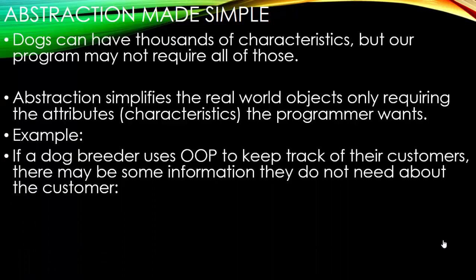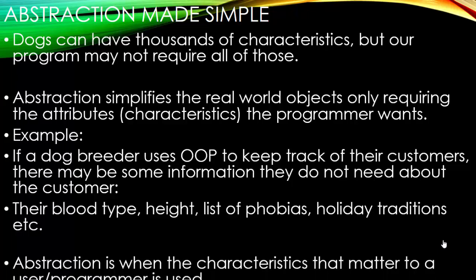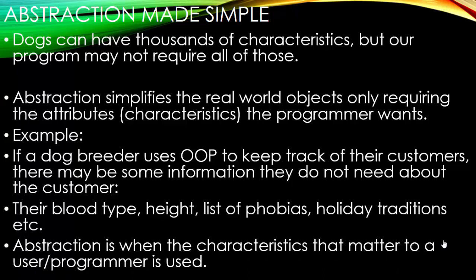If a dog breeder uses object-oriented programming to keep track of their customers, there may be some information they do not need to know about. For example, they don't need to know the customer's blood type. That has nothing to do with purchasing a dog. They don't need to know the customer's height. They don't need a list of their phobias. They don't need how they celebrate holidays. They don't need those traditions. That has nothing to do with purchasing a dog. So abstraction is when the characteristics that matter to a user or programmer is used.